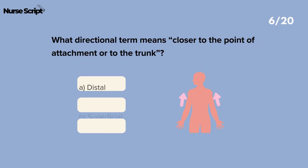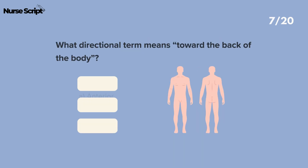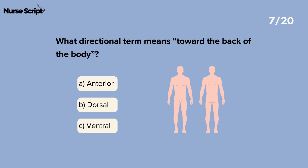What directional term means closer to the point of attachment or to the trunk? Proximal. What directional term means toward the back of the body? Dorsal.